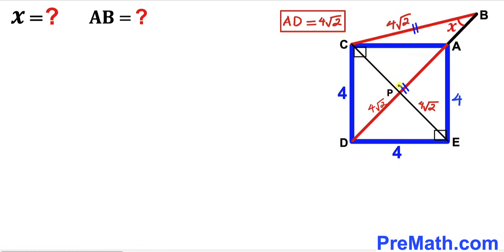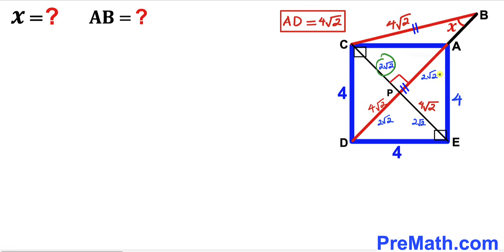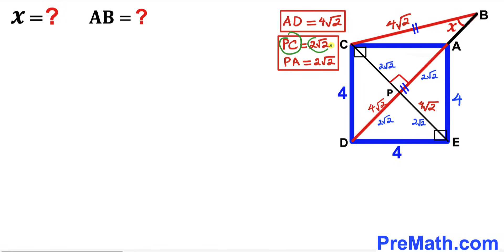The two diagonals intersect at point P and bisect each other, so CP = PE and AP = DP. Therefore all four half-diagonal segments are 2√2 units each. Furthermore, the two diagonals intersect at a 90° angle, so PC = 2√2 and PA = 2√2.